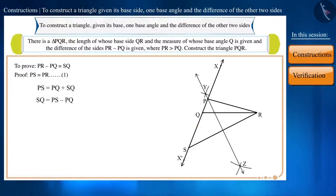Or, SQ equals PS minus PQ. Using equation 1, we can write it like this also. SQ is equal to PR minus PQ. That is, the length of side SQ is equal to PR minus PQ. Therefore, our construction is correct.